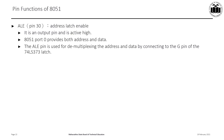Pin number 30 is the Address Latch Enable (ALE) pin. It is a positive-going pulse generated at one-sixth of the oscillator frequency. It is an output pin and is active high. The 8051 provides both address and data on Port 0, where the lower-order address and data lines are multiplexed. The ALE pin is used to de-multiplex the address and data by connecting it to the G pin of the 74LS373 latch.